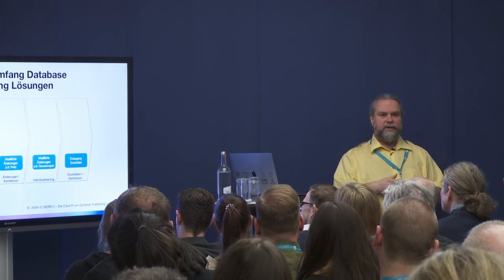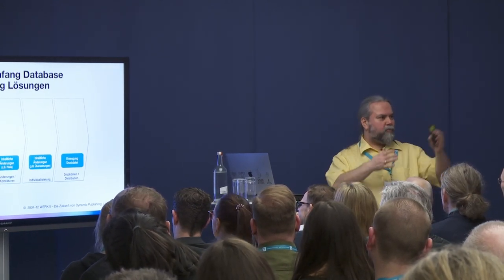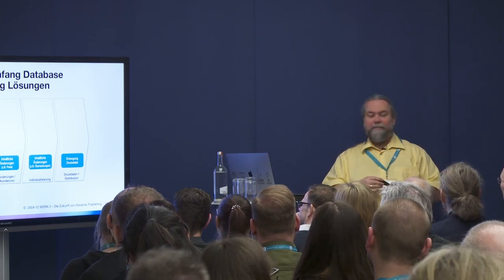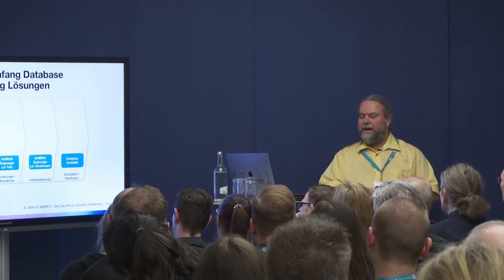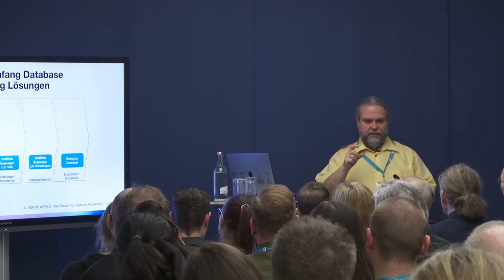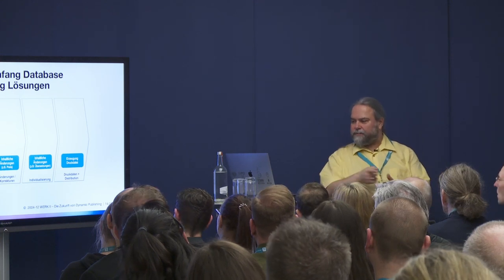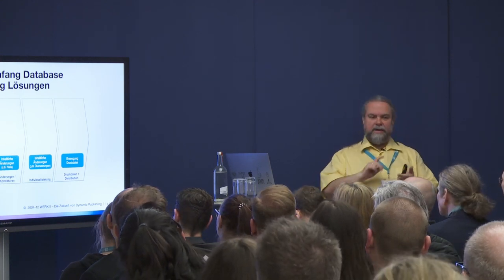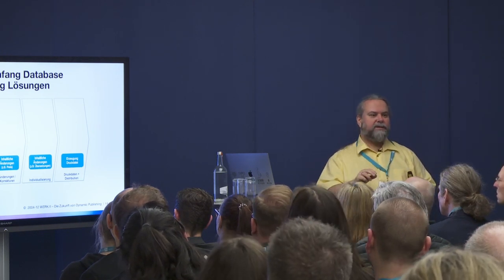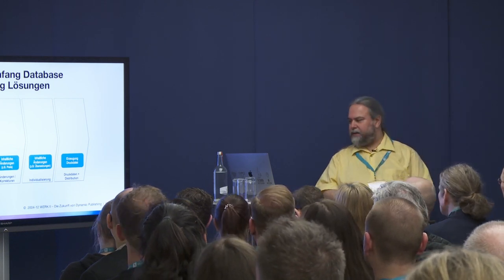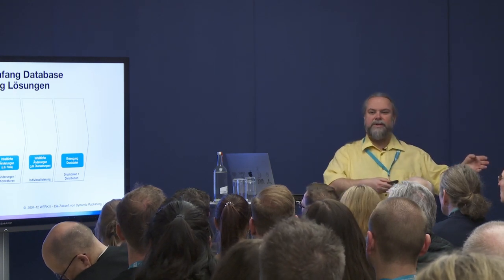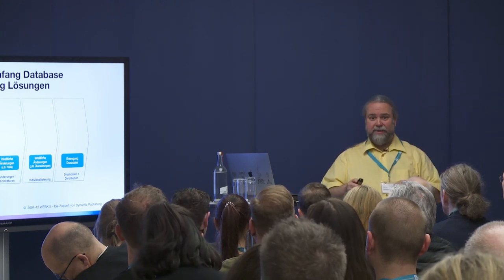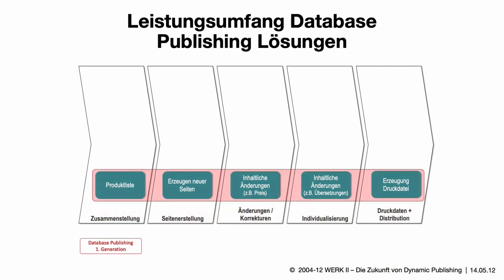We're speaking about product communication here — at the Print Day for product and marketing communication. Originally the point was to automate the big bibles, the large catalogs set by hand. What do I need? I have to have the products first — what's supposed to be included. Then I produce new pages, look at the content, fix price changes and misspellings. Translations were done, and at the end you had a print file — not a PDF, but something you could actually edit. This was revolutionary. That was the first generation.